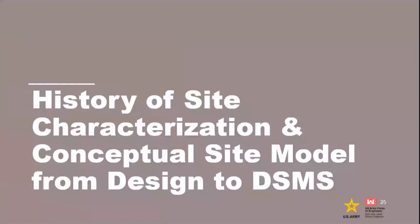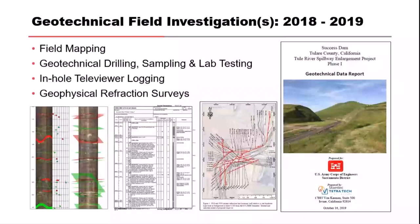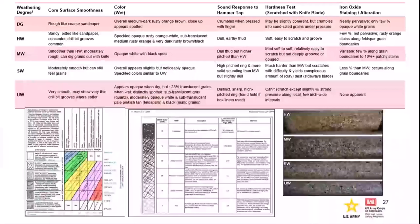Then Sacramento District (SPK) implemented detailed field investigations — lots of detailed geologic mapping, drilling, sampling, testing, downhole televiewers, geophysics, and refraction surveys across the spillway and up on the slope. This was compiled in a data report. This came from another project called Isabella in the same district, where they developed their own mapping concept for granites based on degree of weathering — from disintegrated granite down to unweathered granite — and applied it to Thule River.